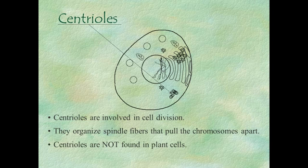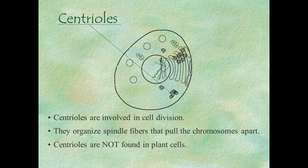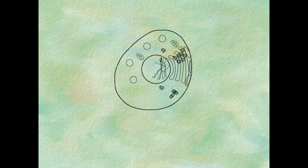Centrioles are not found in plant cells — they're only in animal cells. Everything else, all the other organelles we've seen here in this and in the previous podcast, are found in both plant and animal cells.